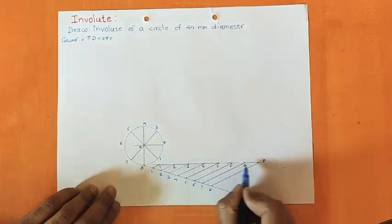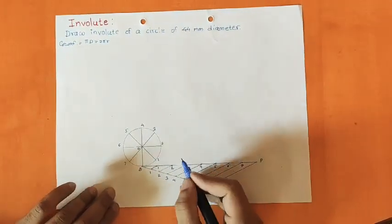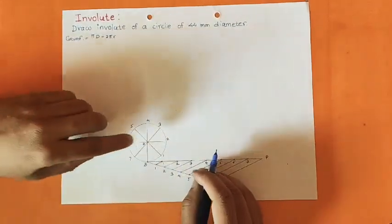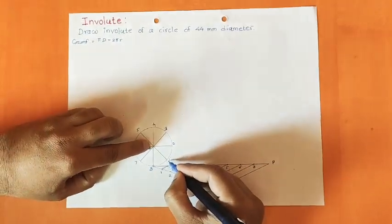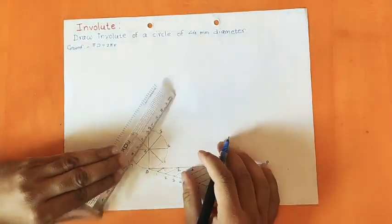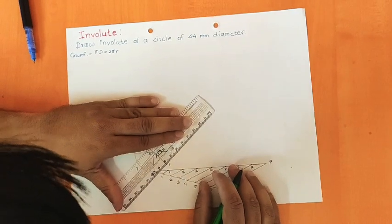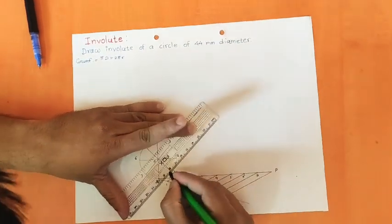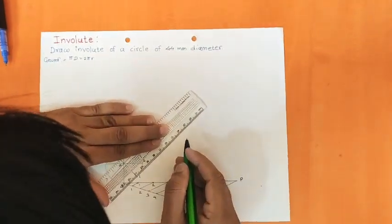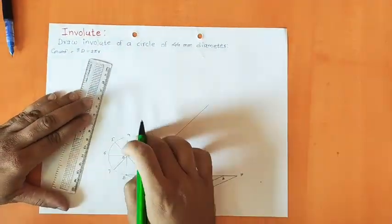As we have drawn a normal at point number 8, similarly you are supposed to draw normals at all these points on the circumference. To draw a normal — you have a drafter whose scales are perpendicular to each other. Align one scale of the drafter to the line O-1, and with the other scale you will be able to draw the tangent at that point. That is how you draw the tangent at each and every point.